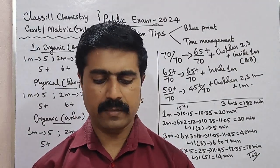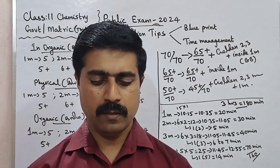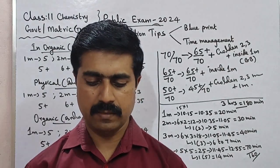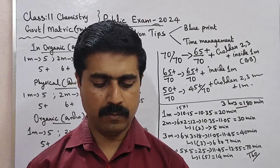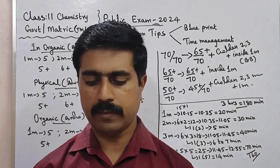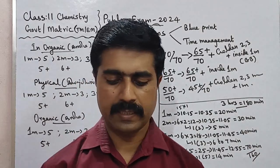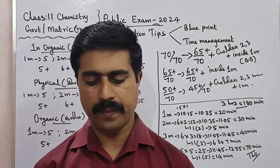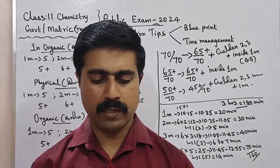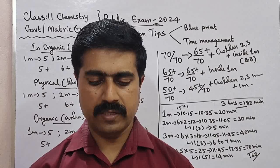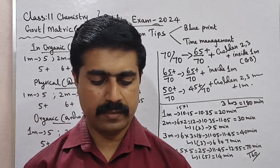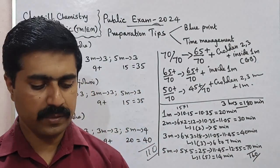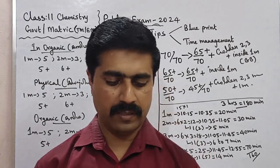Question 21: Write a note on chorionic villus sampling. Lesson 3, book inside, topic number 3.9. Question 22: What are holandric genes? Lesson 4, book bag, question number 13.